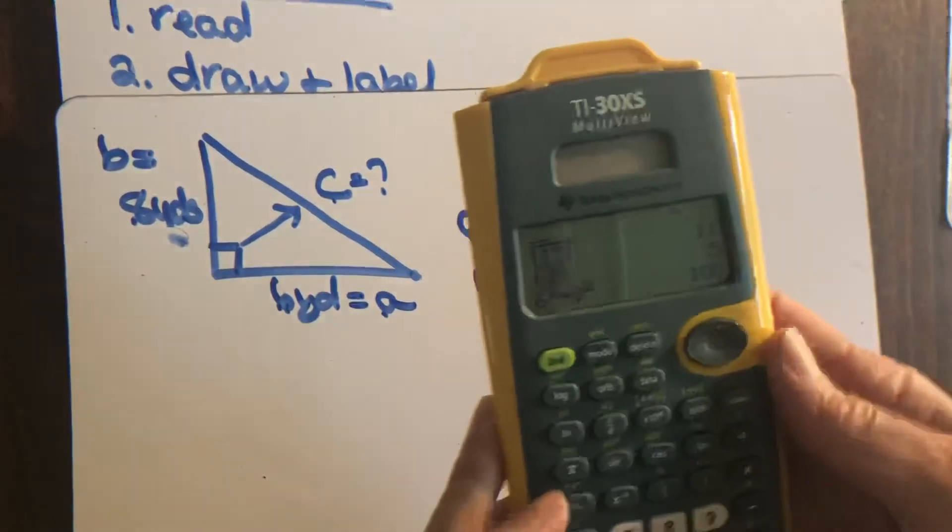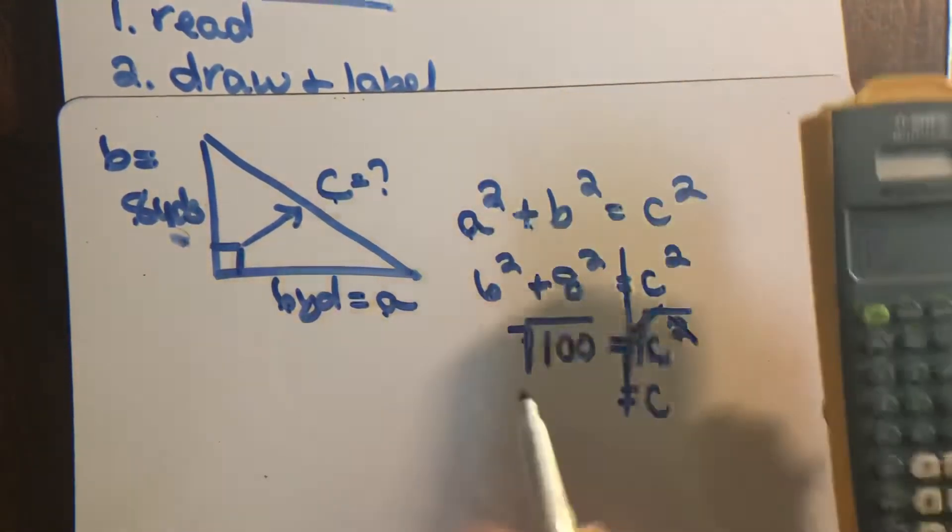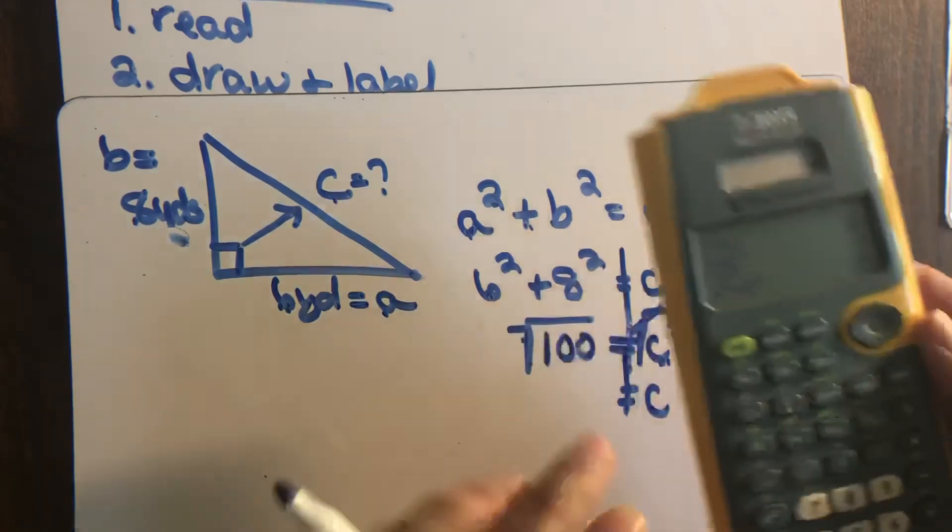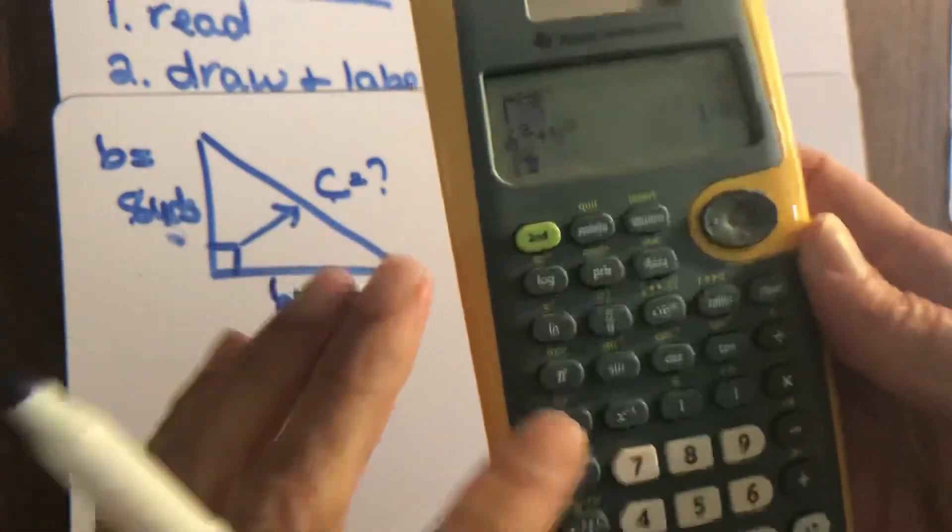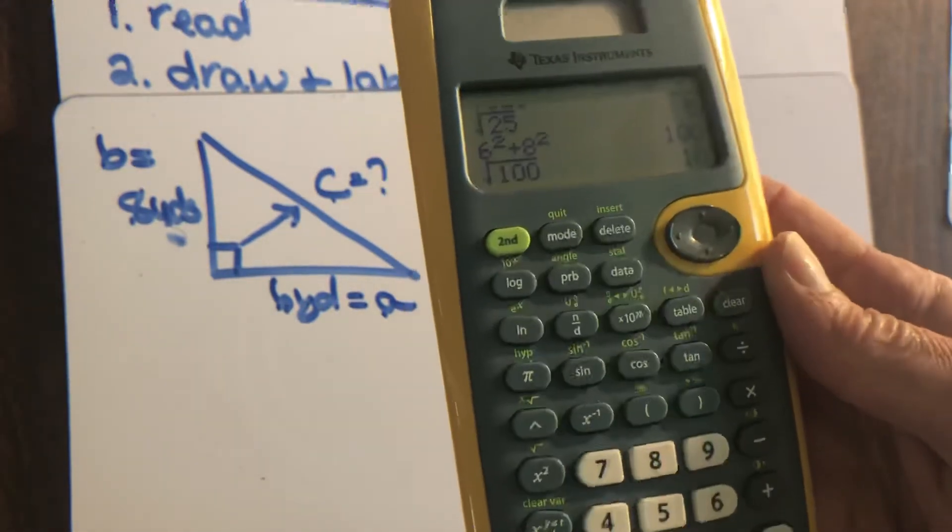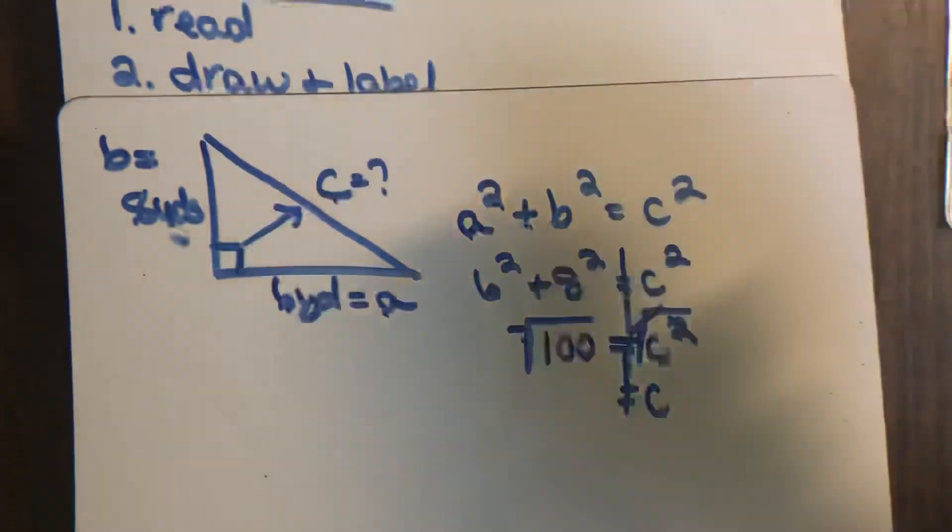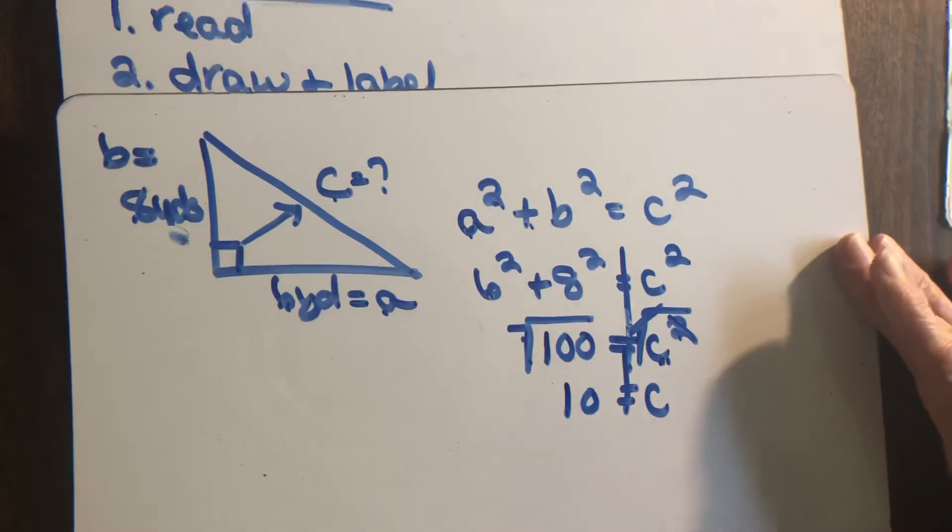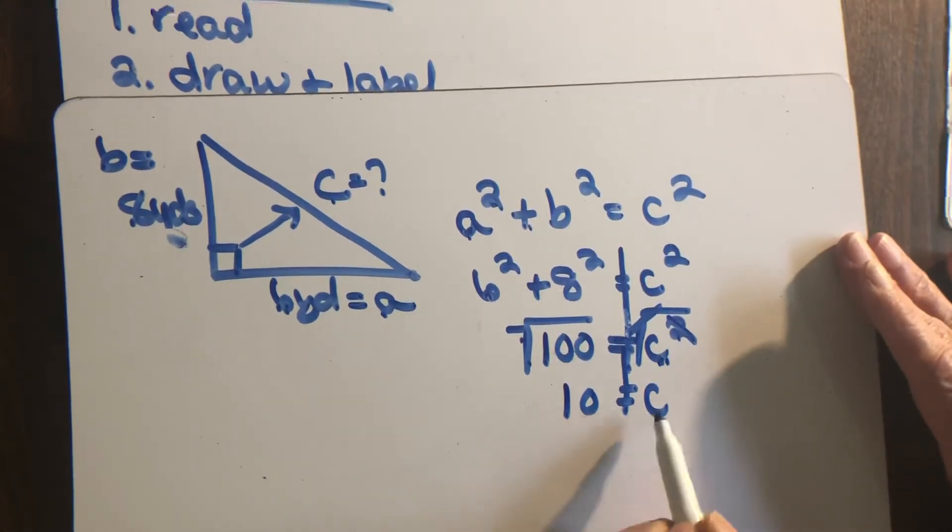You see the C popped out of its little jailhouse. Now the square root of 100 is a math problem. If you don't know how to do it in your head, you say second, x squared, there's your square root sign, 100, hit your enter, and there's your answer. So you got 10. So 10 equals C.